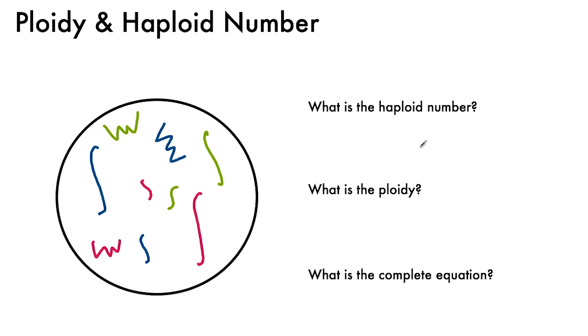So if you'll recall, the haploid number is the number of distinct types of chromosomes. So let's look through the cell and see how many we can count. So I see this one, this one's distinct, this one's also distinct, this one kind of looks like that one so it's not very distinct, and this one looks distinct. So there's three distinct chromosomes, and n equals three.